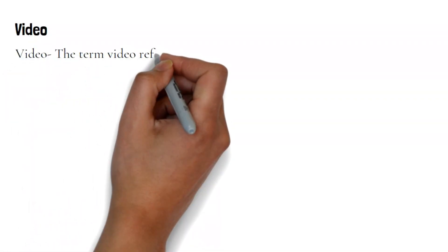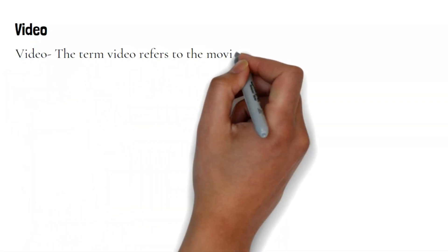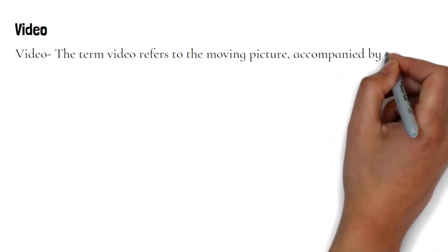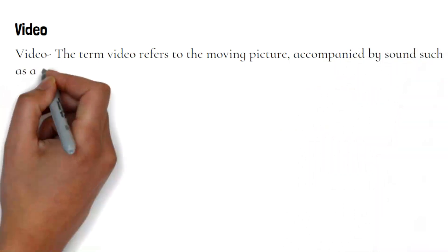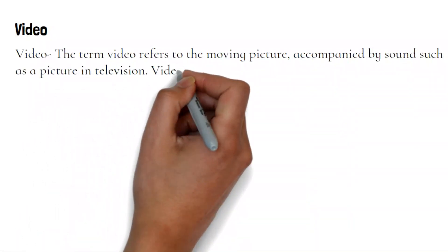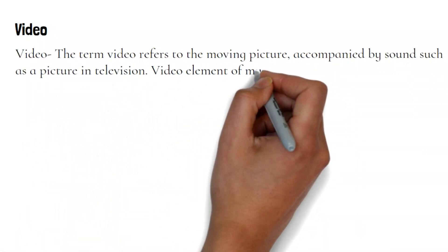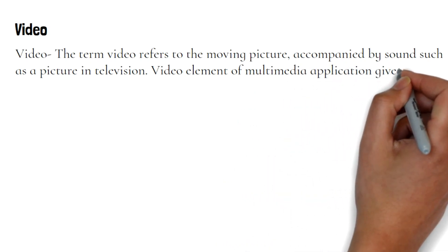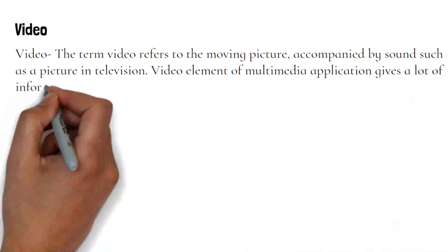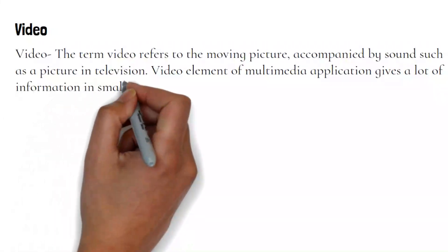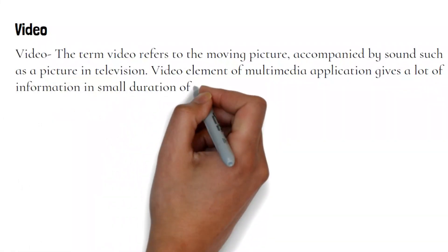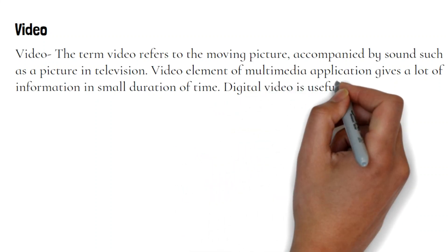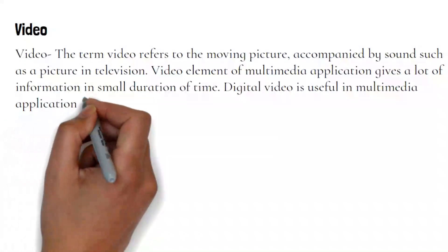The term video refers to the moving picture accompanied by sound, such as a picture in television. The video element of a multimedia application gives a lot of information in a small duration of time. Digital video is useful in multimedia applications.